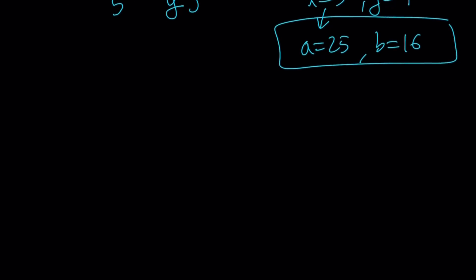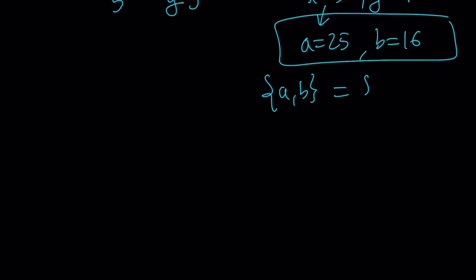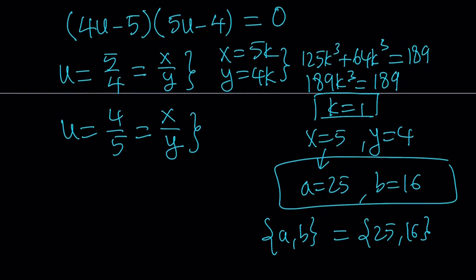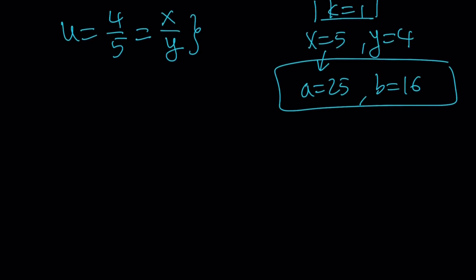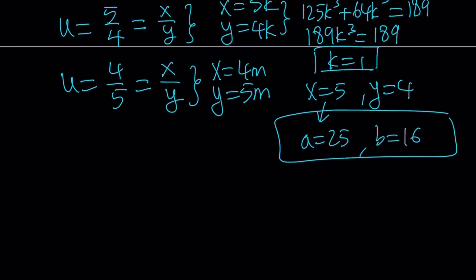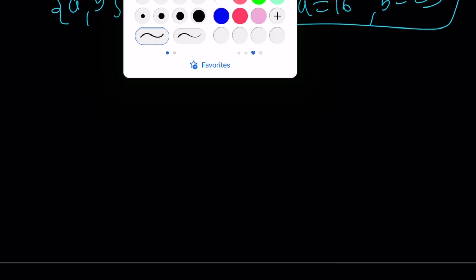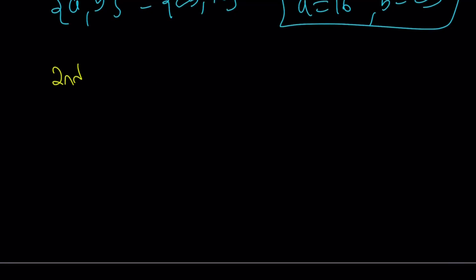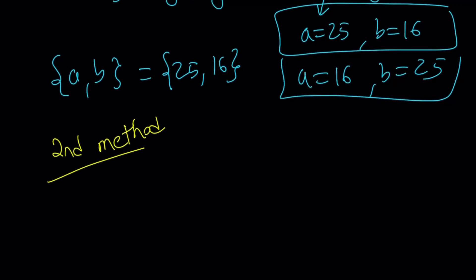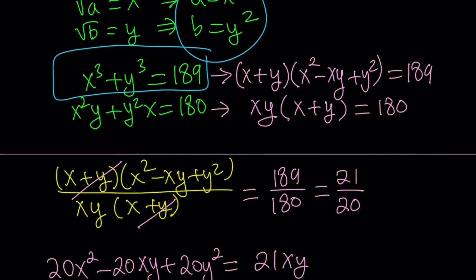That's our first set of solutions. We can write the set {a, b} as {25, 16}. Doing the same with the second case gives a equals 16 and b equals 25 — they just switch around — so we can write the solution set as a set where order doesn't matter. To summarize Method 1: we used substitution and factoring with the sum of two cubes and common factor, then divided the equations to reduce the power to a quadratic.